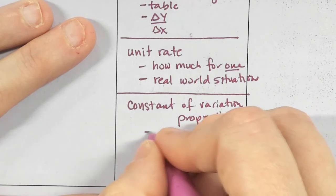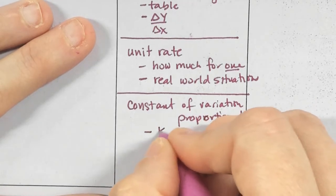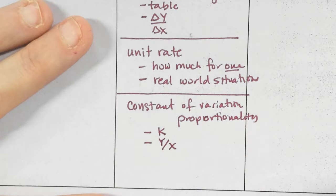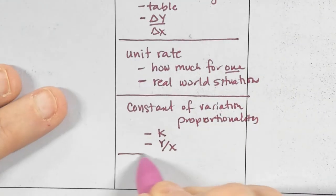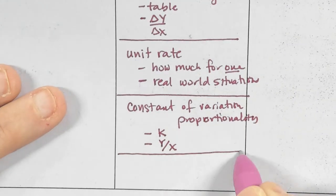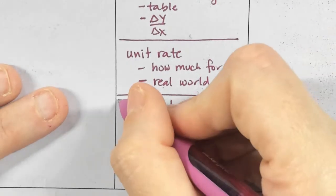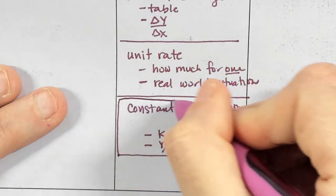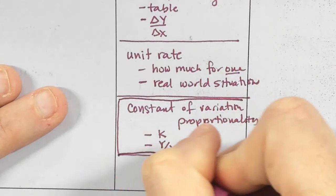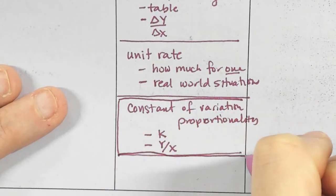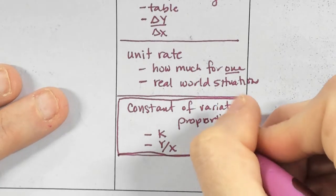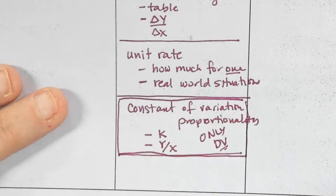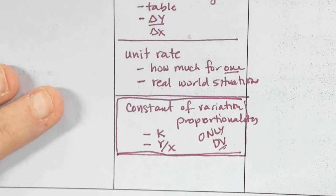The constant of proportionality is K, which is Y over X. Now I want to point out quickly that the constant of proportionality — Y equals KX — this box is only for direct variation.